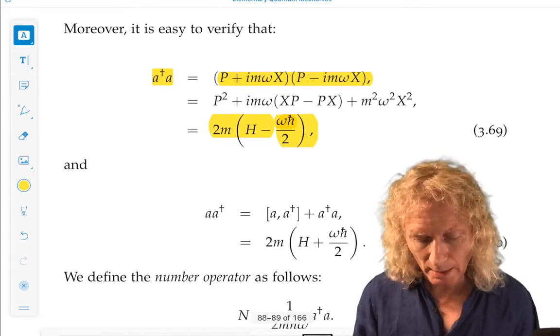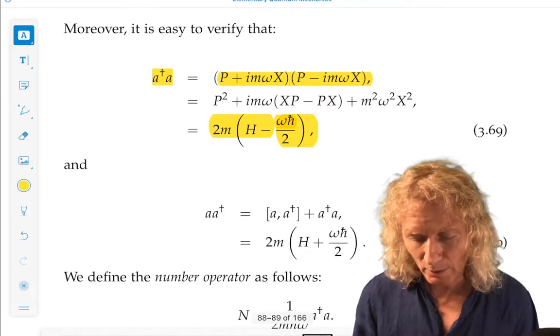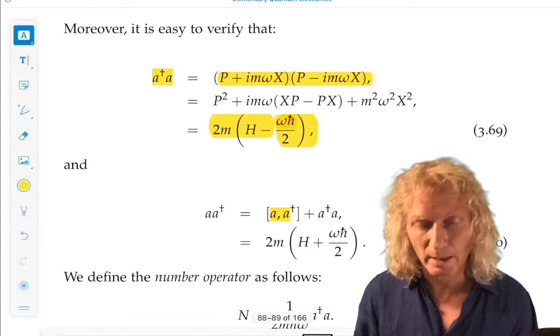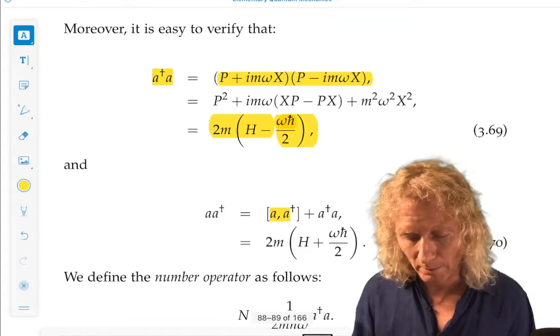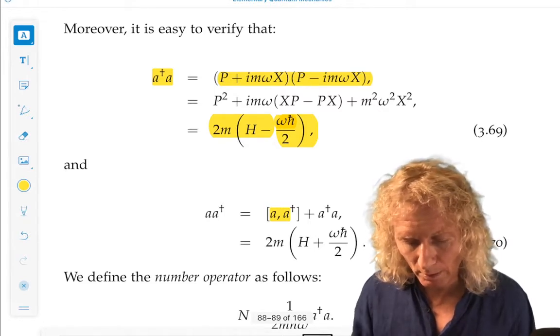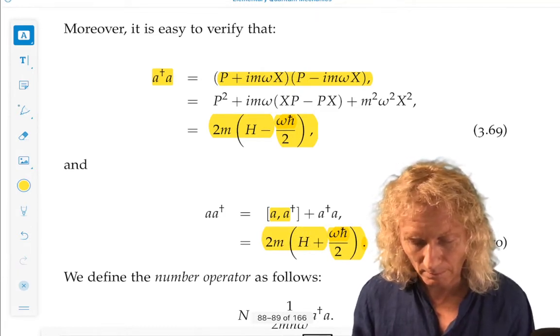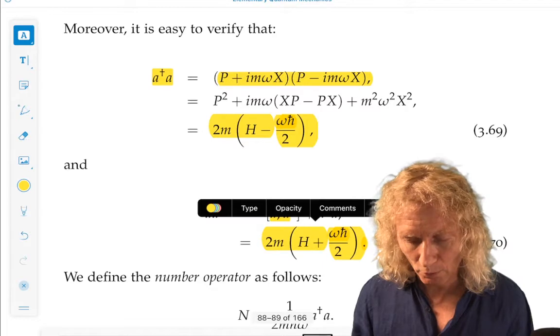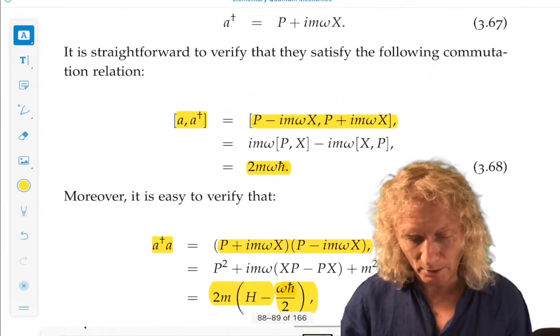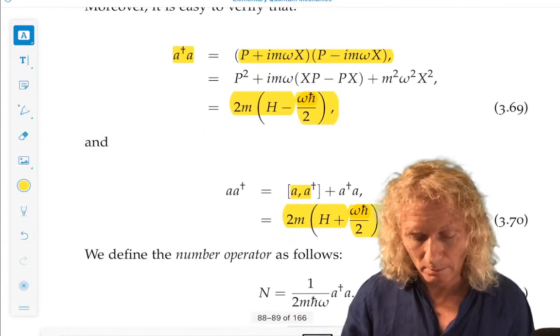Okay. You can also work out a, a dagger. That's nothing more than the commutator of a with a dagger. This is a slick little use of our commutator. Because remember, that's a, a dagger, minus a dagger a, plus a dagger a. Okay. And using what we already have, it's this term. Okay. So these two commutators, products, sorry, we've worked out the commutator above. And we worked out the products of a dagger a and a, a dagger below.